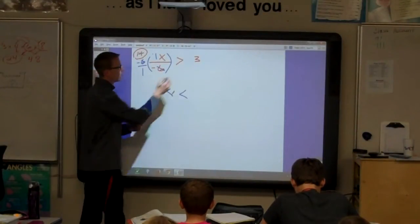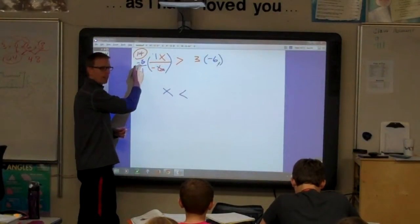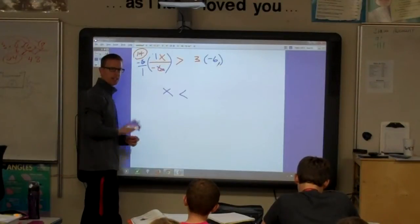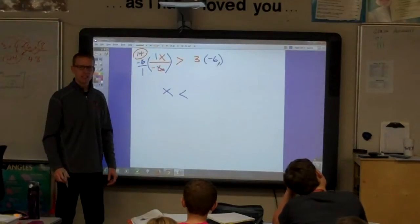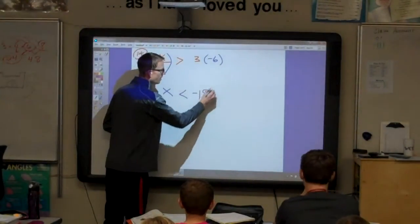Mickey? Multiply 3 by negative 6. Right. Multiply 3 by negative 6. That's what we multiply by over here is negative 6. Negative 6 over 1 is the same as negative 6. So, we multiply by negative 6 on this side. X is less than... What, class? Negative 18.